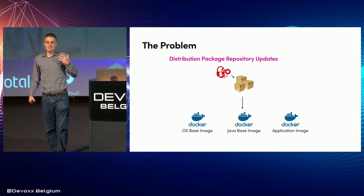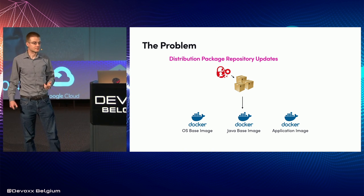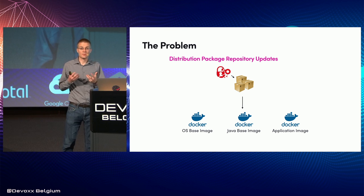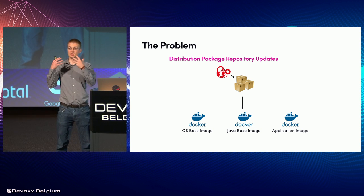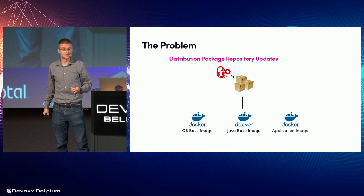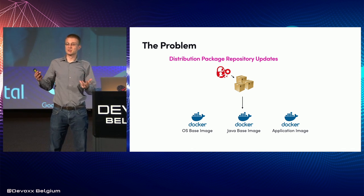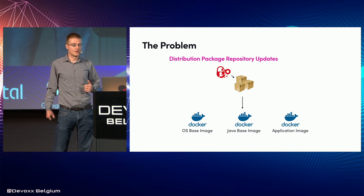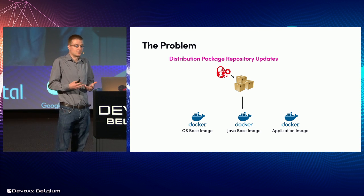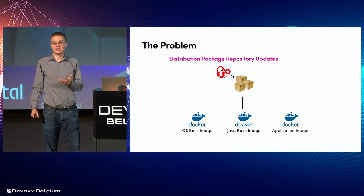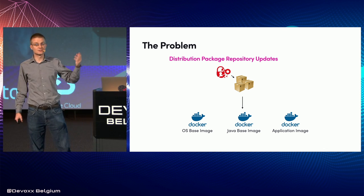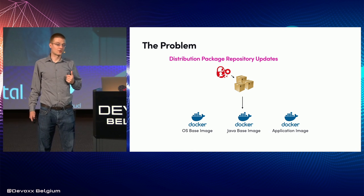What makes it even more challenging is that whenever there's a vulnerability to one of the packages and the distribution publishes a fixed package, you don't know which image to rebuild. If it's a Java package, then you have to rebuild the Java base image. But there is no easy way to detect which packages get installed on which of your Docker images.